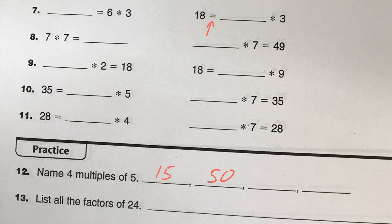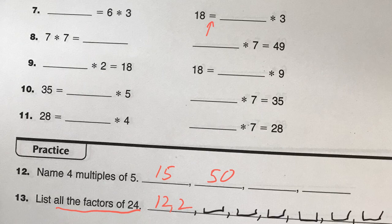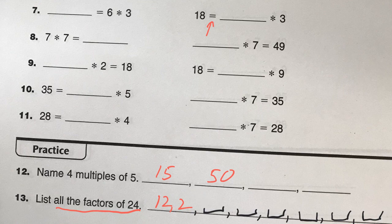And finally, all the factors of 24. For example, 12 and 2 are some factors. Let me give you a hint — there are a total of 8 factors of 24. Can you get all 8 factors of 24? I gave you 2 of them, 6 more to go. And if you know your multiplication facts, it shouldn't be too tricky.